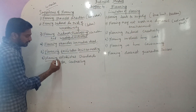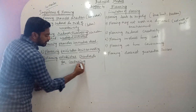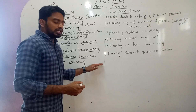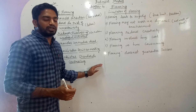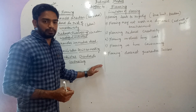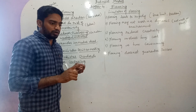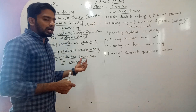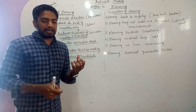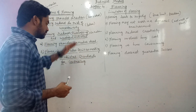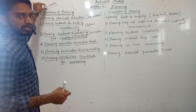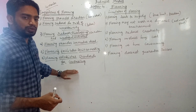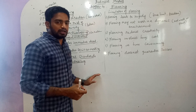Sixth point: planning establishes standards for controlling. If you make the correct planning, it always establishes standards for controlling without creating issues or problems in the future — in production, in sales, in marketing, and in different departments of the organization. Planning always controls the managerial activities of the organization. These are the six points under the importance of planning, which helps the organization to run in a successful and easy manner.